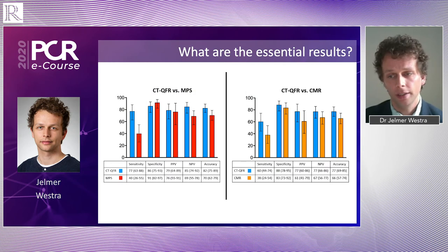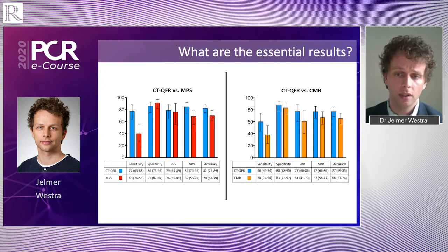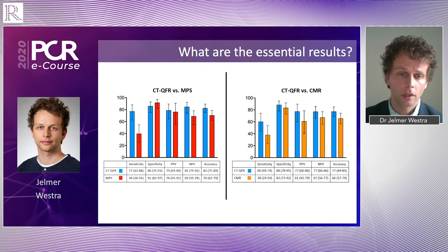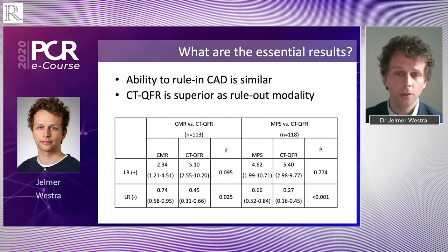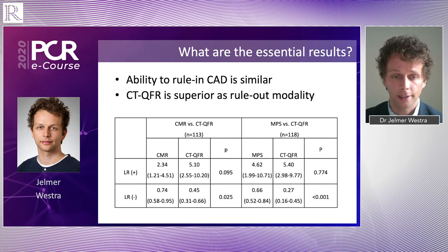The sensitivity of CT QFR was better than scintigraphy and also better than CMR in the head-to-head comparison. For all cases where we had paired data sets, the specificity was similar, while the diagnostic accuracy was also superior for CT QFR, both compared to scintigraphy and CMR. Importantly, when looking at the likelihood ratios, the positive likelihood ratio was also superior compared to CMR and scintigraphy, while the negative likelihood ratio was similar. So it appears that CT QFR is superior as a rule-out modality in those cases where it is feasible to compute CT QFR.